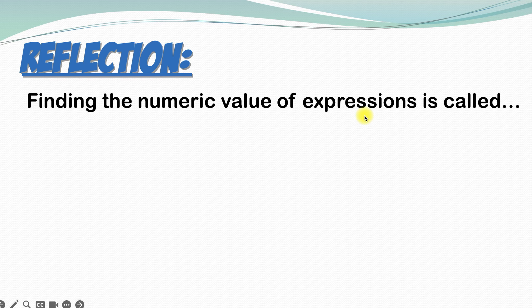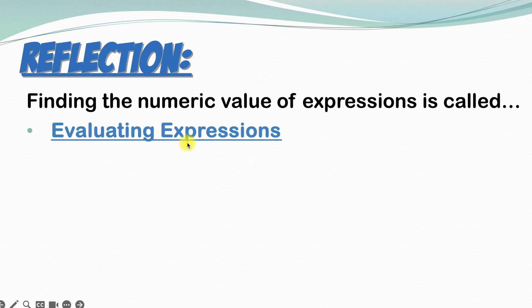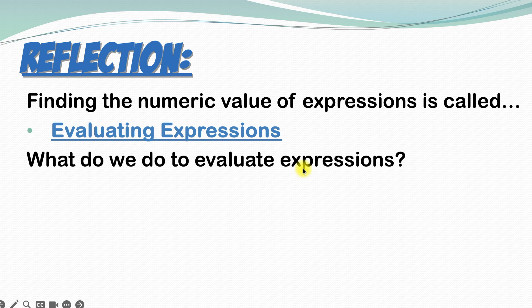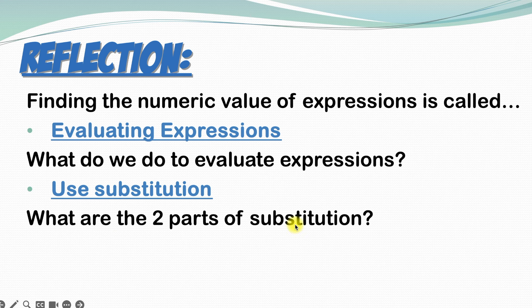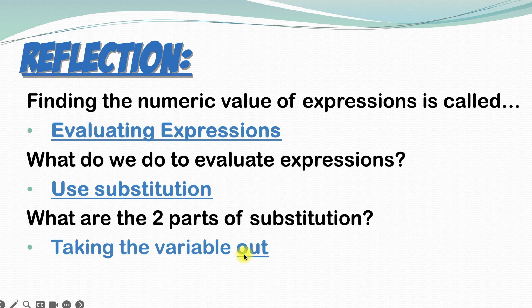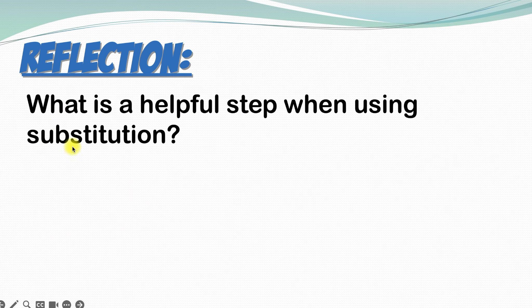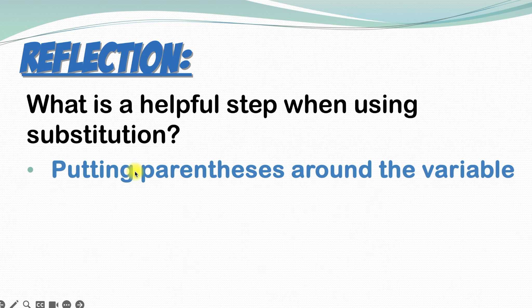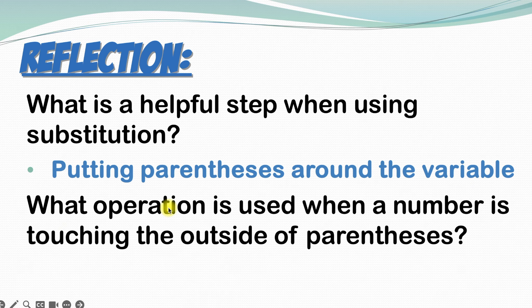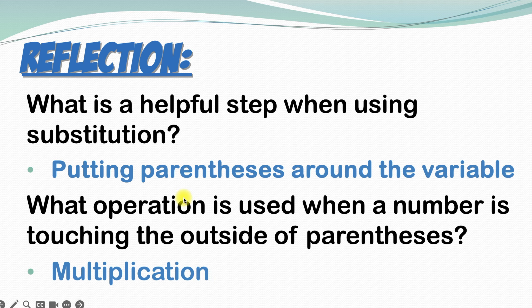Let's reflect on what we've learned today. Finding the numeric value of expressions is called evaluating expressions. To evaluate expressions, we use substitution. The two parts of substitution are: first, take the variable out of the expression, and second, put the value into the expression. A helpful step is putting parentheses around the variable. When a number is touching the outside of parentheses, that means multiplication — and using parentheses helps you remember that.